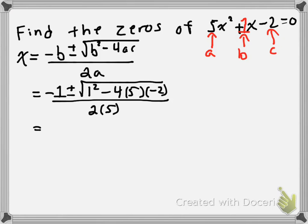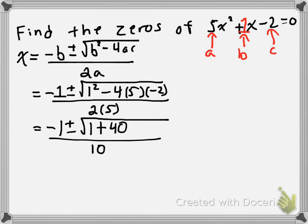So, on the next line, we're going to have negative 1 plus or minus the square root of 1 squared, which is 1, minus 4 times 5 times negative 2. So, negative 4 times 5 is negative 20, and negative 20 times negative 2 is, of course, positive 40. And we're going to be dividing that by 2 times 5, which is 10. So, underneath the square root, that gives us negative 1 plus or minus the square root of 1 plus 40, which is 41, over 10.